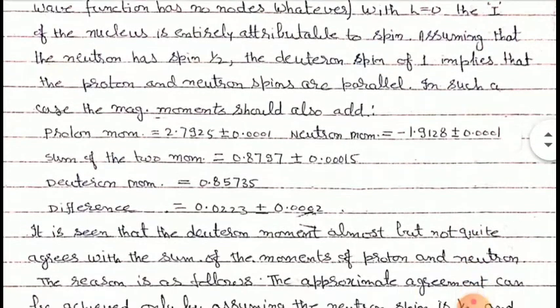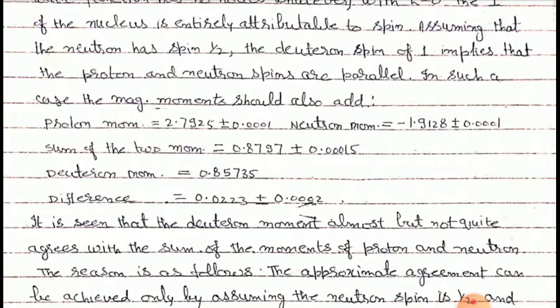In such a case, the magnetic moments should add. The proton magnetic moment is equal to 2.7925 nuclear magnetons, and the neutron magnetic moment is minus 1.9128 nuclear magnetons. The sum of these two moments is 0.8797, and the experimentally determined value of the deuteron magnetic moment is 0.85735 nuclear magnetons.